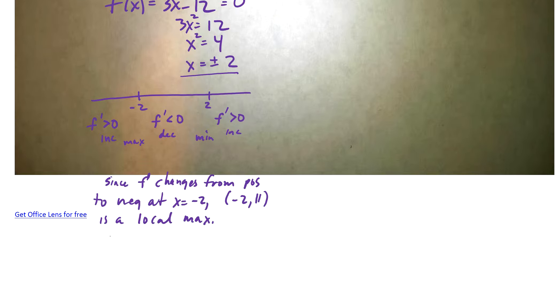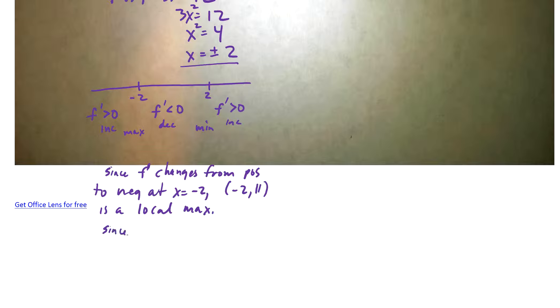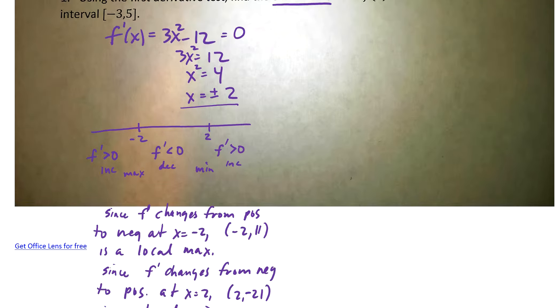Since f prime changes from negative to positive at x equal to the point 2, if I plug 2 in there, I get negative 21. And you can do that work on the side. 2 negative 21 is a local min. Okay, so I've got these two extrema for my critical points. But, then I do need to check the endpoints.